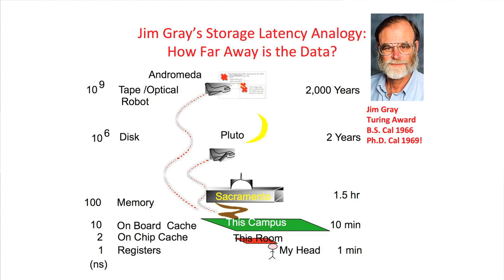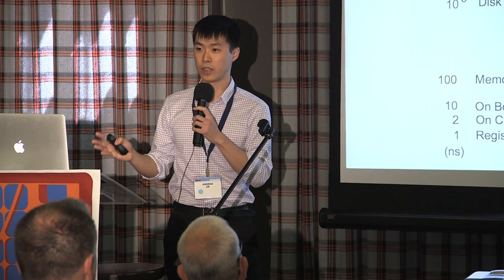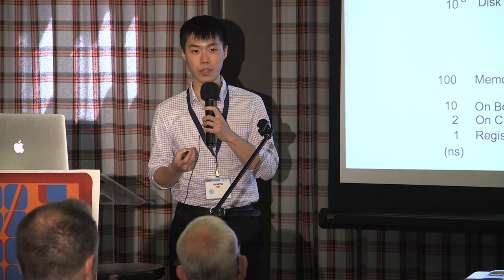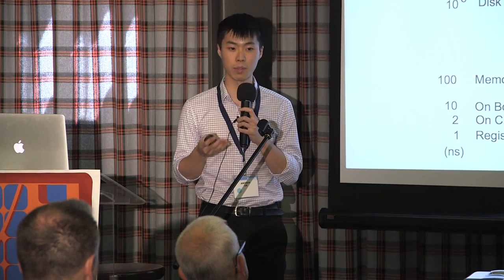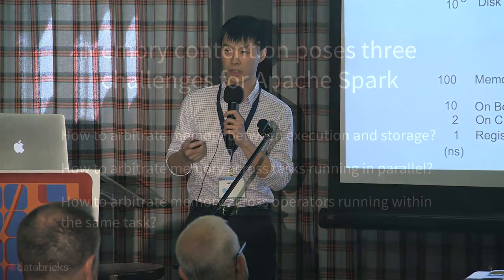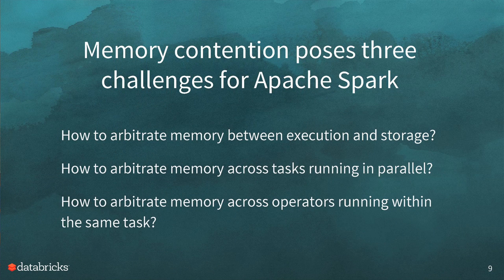To summarize Jim Gray's analogy: if reading data from memory is like going to Sacramento — about 90 minutes from Berkeley — then picking up the same data from disk is like going all the way to Pluto. How this applies to Spark is that where possible, we try really hard not to write any data to disk if we don't have to. Memory is always a constrained resource in Spark — if you had more memory, you can process more data while spilling less to disk. However, everyone wants memory, and within a system like Spark there are many sources of contention that make managing memory very difficult.